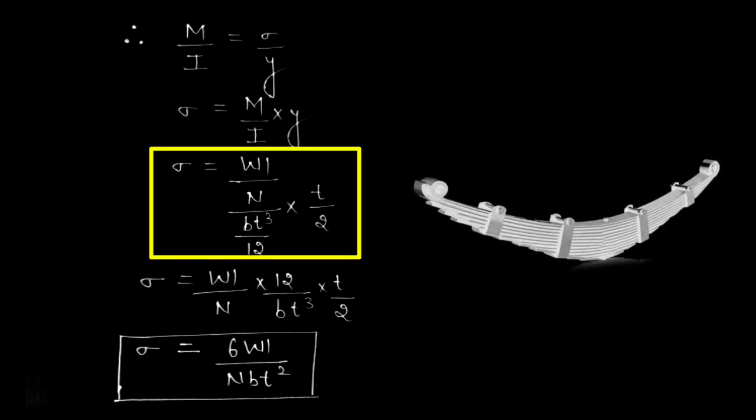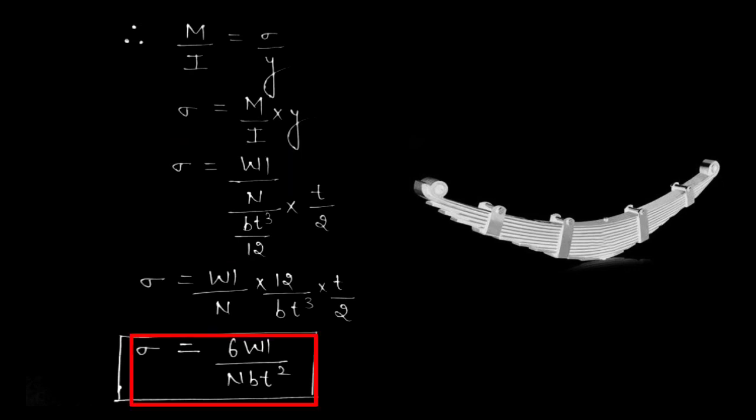When we put the values in M upon I into Y—WL divided by N, divided by bt cubed by 12, into t by 2—after solving it, the bending stress will come. Bending stress is 6WL divided by Nbt squared. So this is the formula of bending stress.